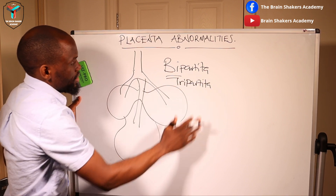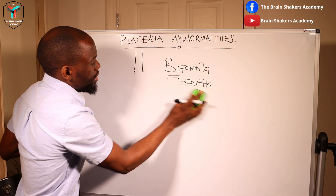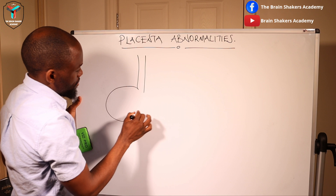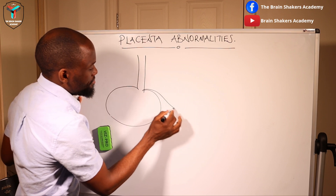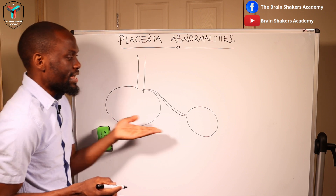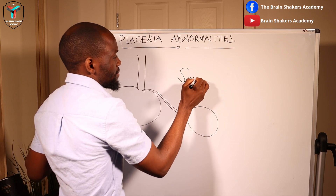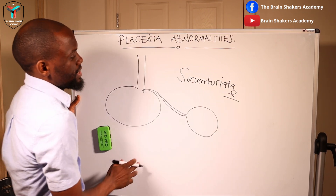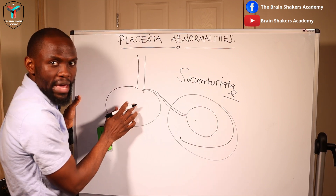With a bipartita or tripartita, sometimes you have a well-formed placenta that ends up having an additional lobe. You have a main well-formed placenta with vessels crossing over, and then a tiny little placenta on the other side. This is what we call a placenta succenturiata — an extra lobe of placenta separate from the main placenta.